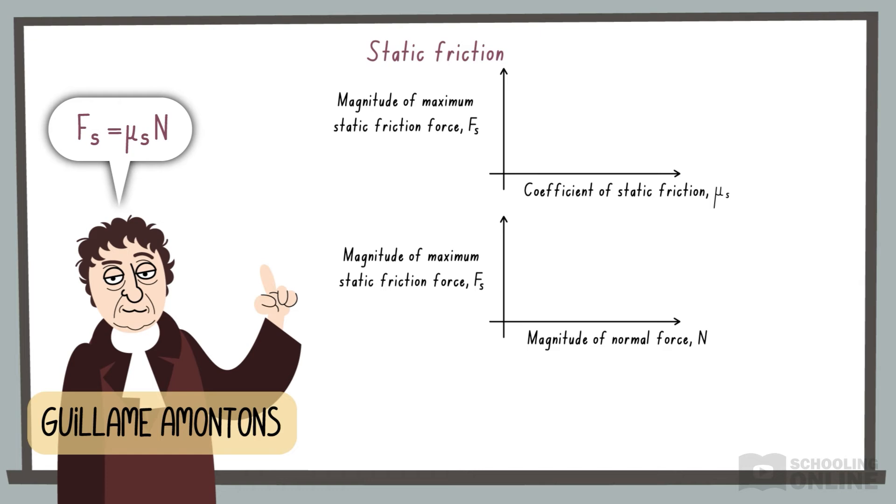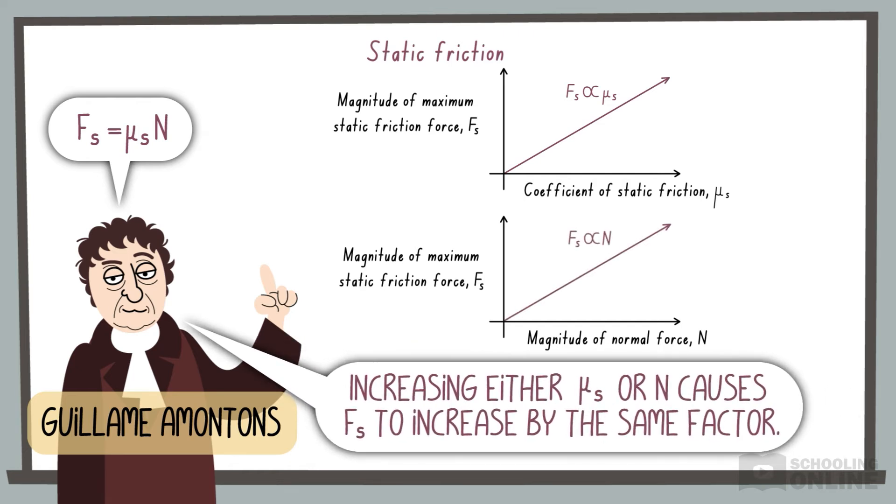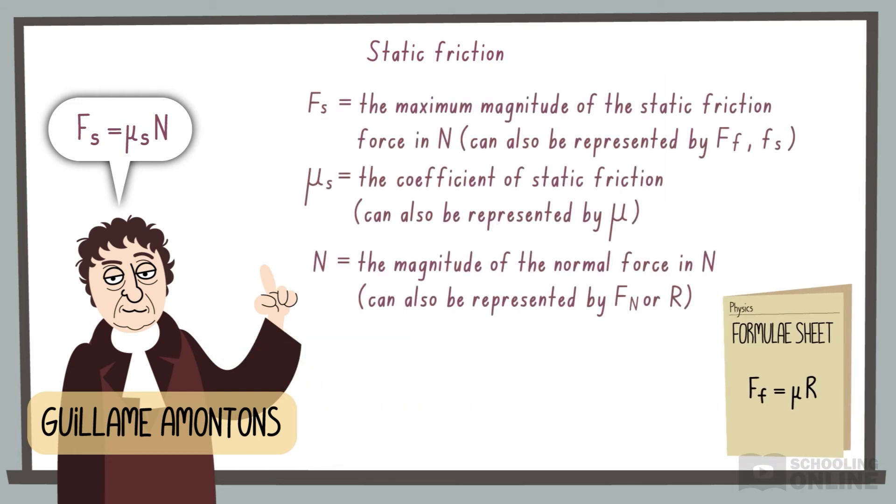This formula shows that the maximum amount of static friction is proportional to the coefficient of static friction and the normal force. Doubling either factor will double the maximum amount of friction. Note that your formulae sheet might represent some or all of these terms using different symbols.